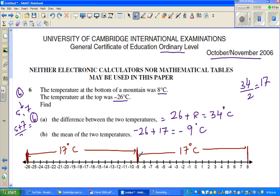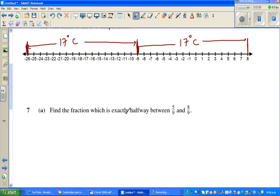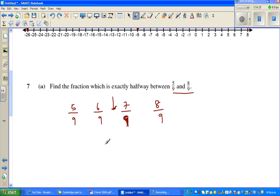This is a tricky question. You can go wrong here if you don't understand it graphically. Find the fraction which is exactly halfway between 5/9 and 8/9. So you got 5/9, 6/9, 7/9, and you got 8/9. So halfway, this comes here somewhere between 6/9 and 7/9. So here you can go like this.